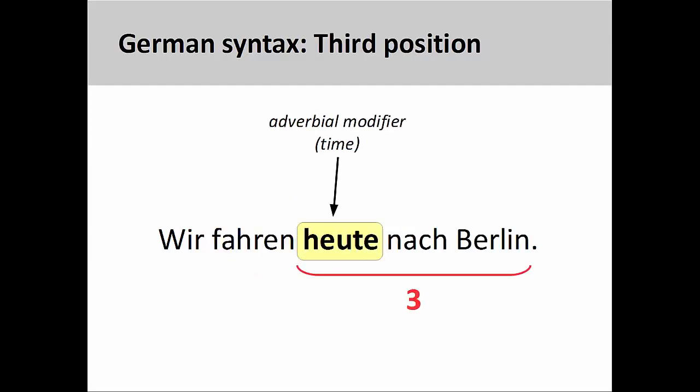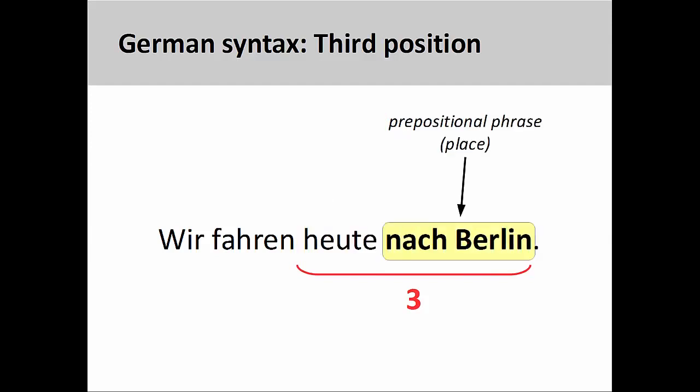In the third position, we can see 'heute' — 'today' — acting as an adverbial time modifier, as well as the dative prepositional phrase 'nach Berlin' — 'to Berlin' — describing the place to where the subject is driving.